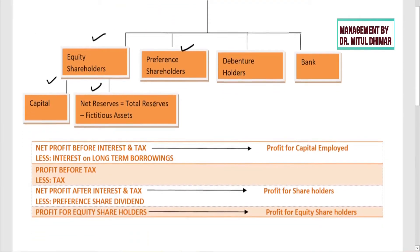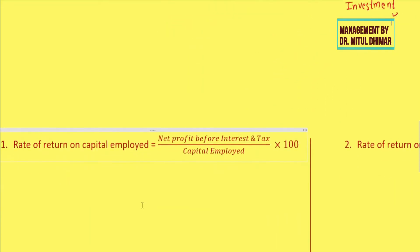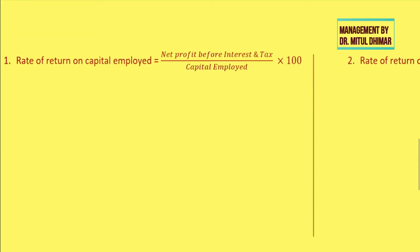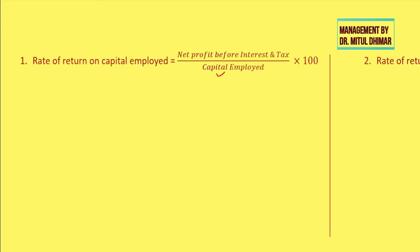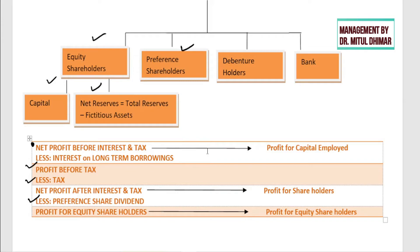The first profit used here is net profit before interest and tax, found by deducting total expenditure from total revenue. From this profit, we pay interest to long-term borrowers, then tax to the government, then dividend to preference shareholders, and the rest goes to equity shareholders. The first return ratio is the rate of return on capital employed — capital employed is capital that stays within a business for a long time, meaning the capital of long-term investors.